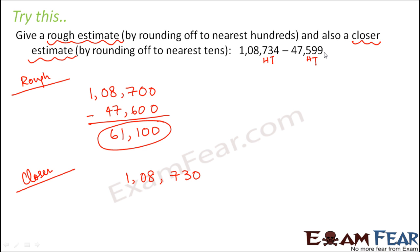Similarly here, this would lie between 47,590 and 47,600. So there we would see that it is more close to 47,600. So when you find the difference, you get it 61,130. So this would be a closer estimate.